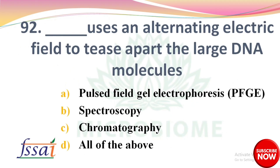DASH uses an alternating electric field to tease apart large DNA molecules. Options: A) Pulsed-field gel electrophoresis, B) Spectroscopy, C) Chromatography, D) All of the above. The right answer is option A: Pulsed-field gel electrophoresis (PFGE).